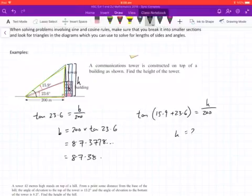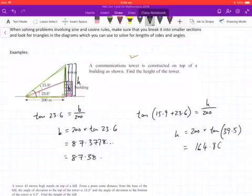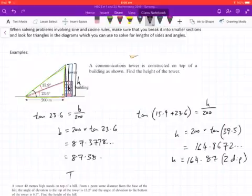now that's going to be 39.5, which is equal to 164.8672 dot dot dot, so to two decimal places, 164.87. So the tower height...